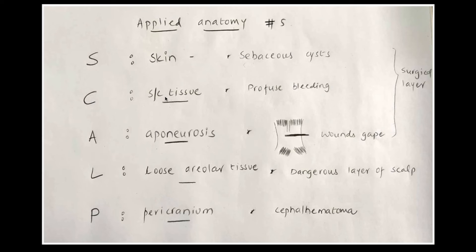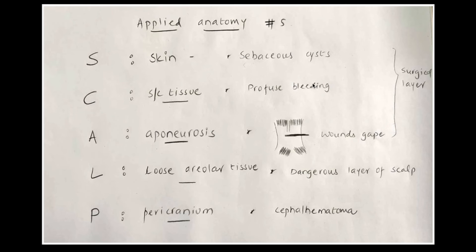For applied anatomy of the five layers: the first layer, skin, has thick hairy skin with many sebaceous glands, making it vulnerable to sebaceous cysts. The second layer, dense fibrous connective tissue, has rich blood vessels — so when cut, the dense fibrous tissue won't let arteries collapse, leading to profuse bleeding. Fluid accumulation in this layer causes intractable pain due to the fibrous septa.